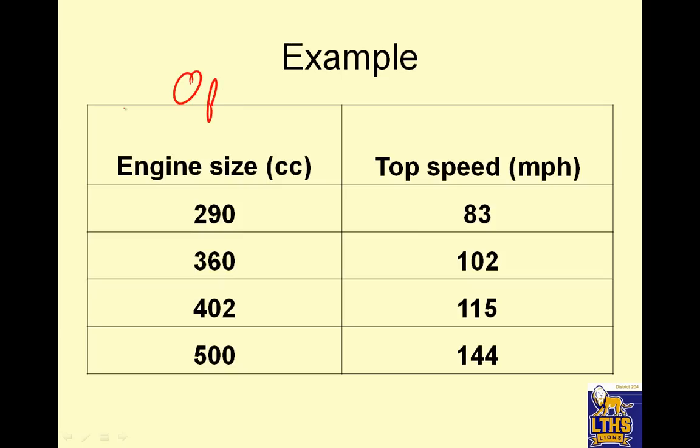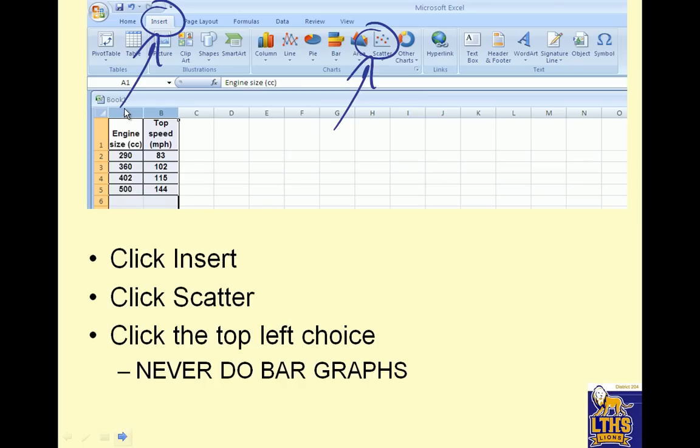Open up Excel, if you have it, and you should. Open Excel and try and make this graph. I'm going to do it after I go through these things. Open Excel. So engine size, top speed, engine size, top speed, engine size, top speed. So looking at this, the first thing you do when you open Excel is put in your little table, right?